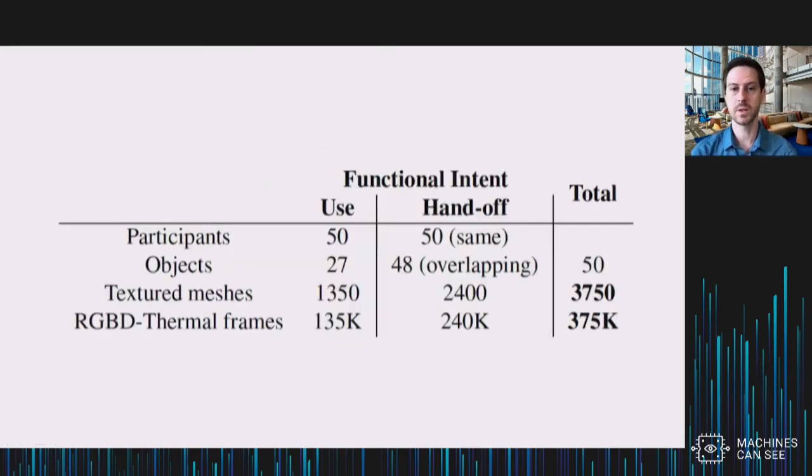And in total, we have 50 objects. For 27 of the objects, we ask all 50 participants in our study to act like they're using the object. For some of the abstract objects, it doesn't make sense to them to use it. Or for things like the camera it does. And for 48 of the objects, we ask them to grasp it if they were going to hand it off to another human. And we get hundreds of thousands of total frames of grasping information. And 3,750 total textured objects with particular grasps.